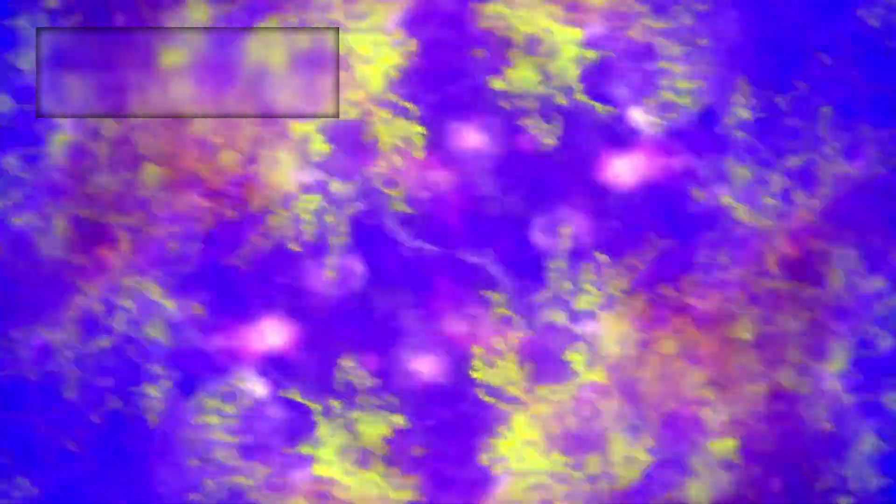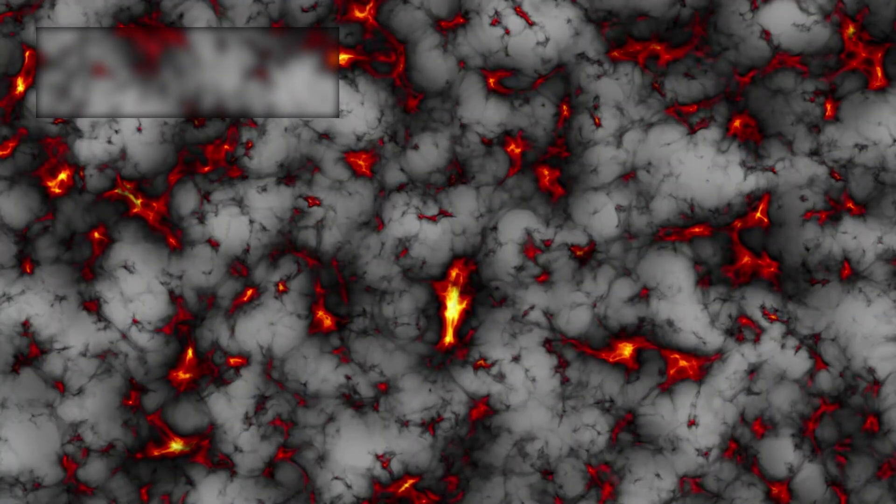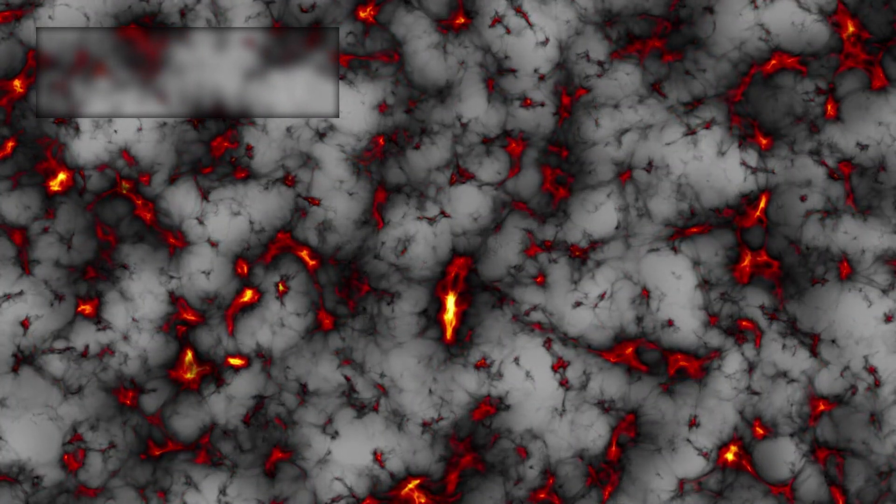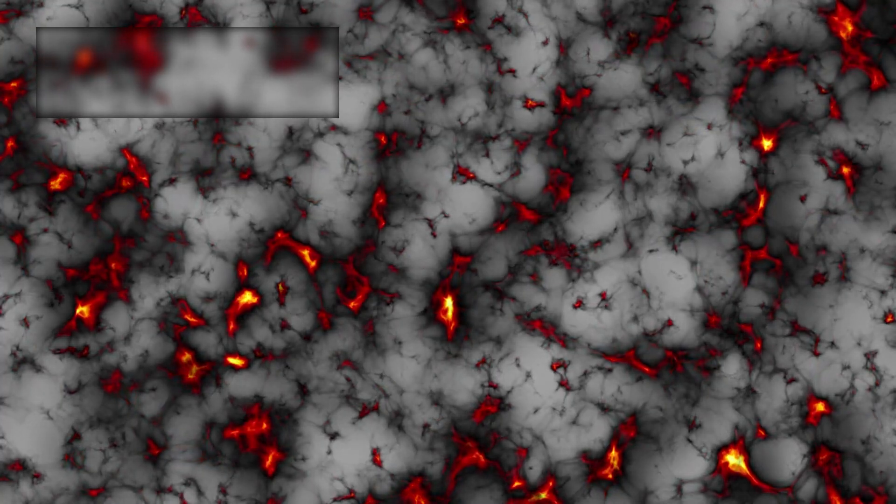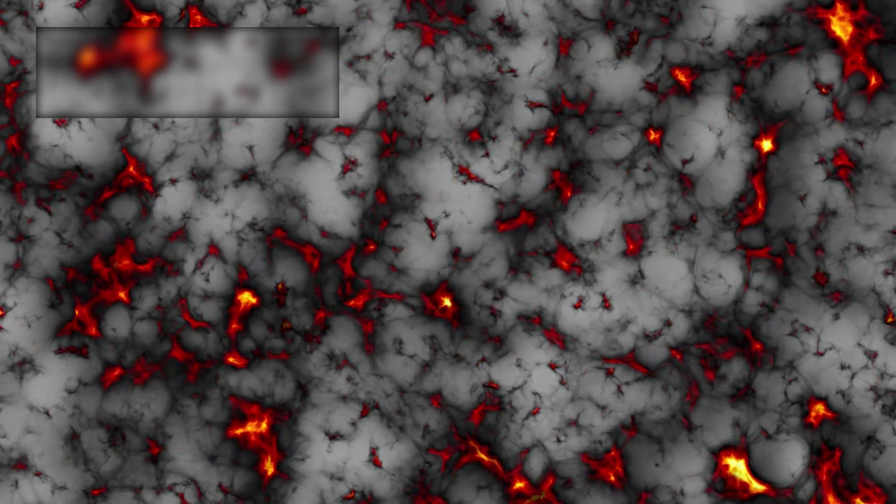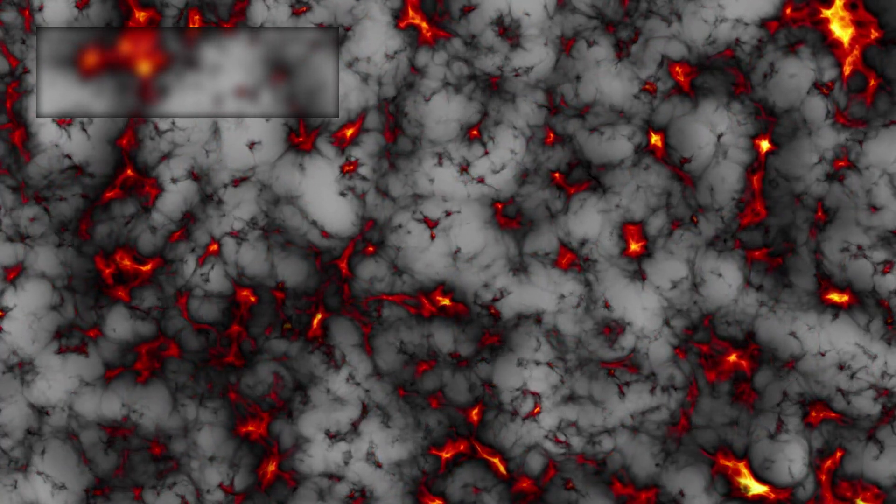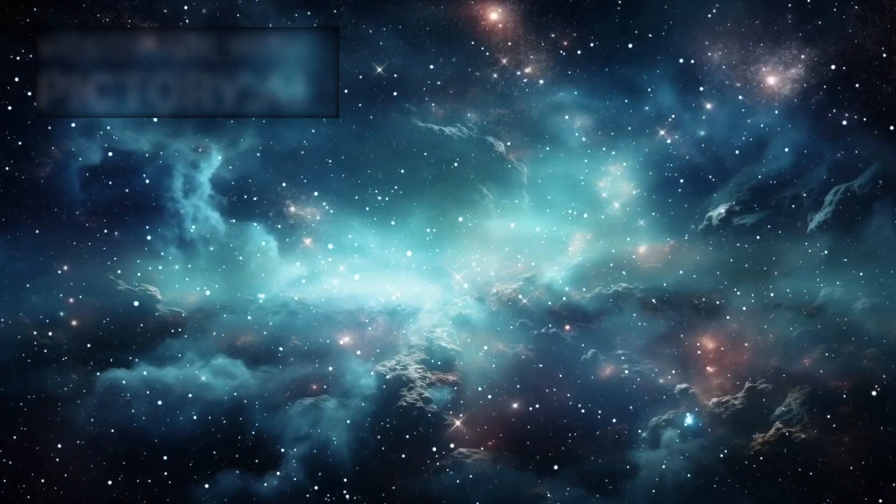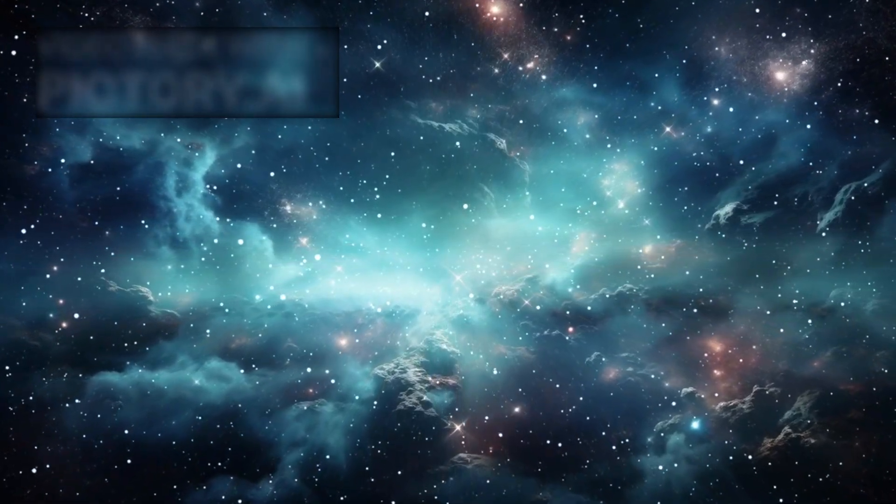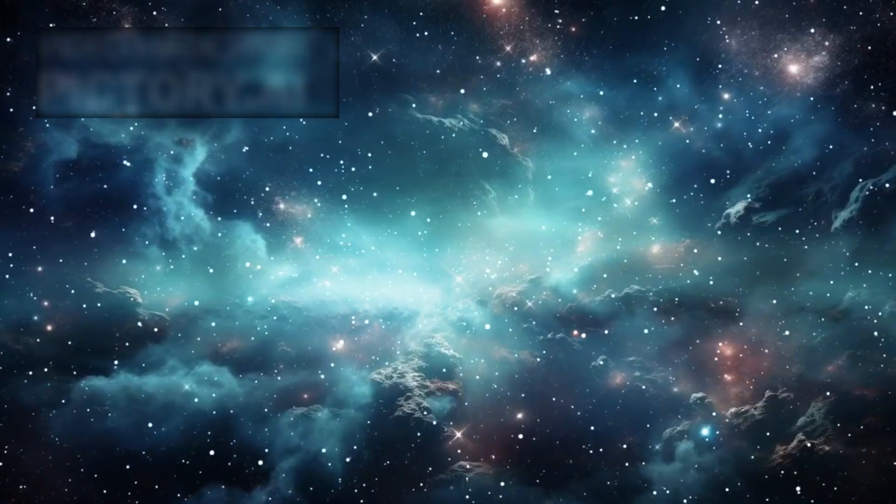The JWST's discoveries are also prompting scientists to revisit models of large-scale structure formation. The cosmic web—the vast network of galaxies and dark matter connecting them—appears denser and more complex than previous observations suggested. These findings hint at new, possibly unknown physical processes or interactions that shaped the early cosmos.